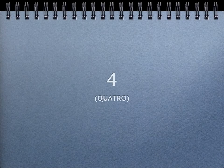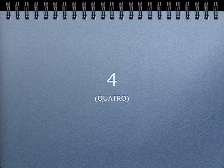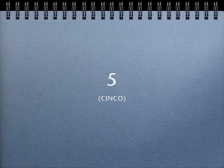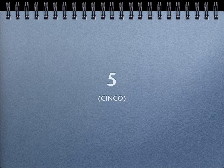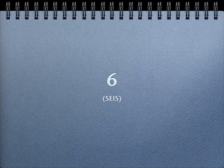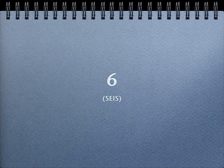Number 4 in Portuguese is 'quatro.' Number 5 is 'cinco.' Number 6 — and pay attention to that S at the end, because it means you have to make a soft SH sound at the end. So repeat with me: 'seis.'